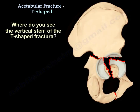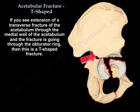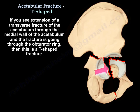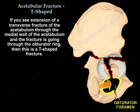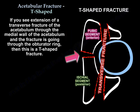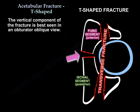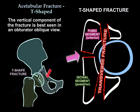Where do you see the vertical stem of the T? If you see extension of a transverse fracture of the acetabulum through the medial wall of the acetabulum and the fracture is going through the obturator ring, then this is a T-shaped fracture. The vertical component of the fracture is best seen on the obturator oblique view.